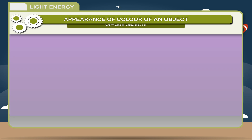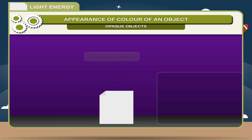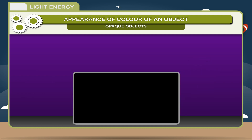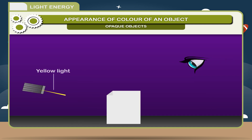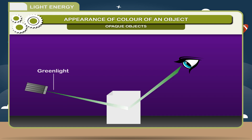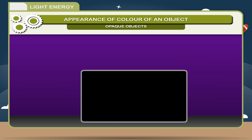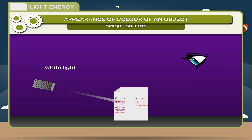Opaque Objects: An opaque object owes its color to the constituents of white light it reflects to the eyes. If white light falls upon a sheet of white paper, it appears white because it reflects all the colors falling on it. A blackboard appears black because it absorbs all colors and reflects none. White paper will appear yellow in yellow light and green in green light. If red paper is placed in white light, it appears red because it absorbs all colors except red. The property of a body to reflect a particular color is known as selective reflection. The color of an opaque object depends upon the color of light which it is capable of reflecting.